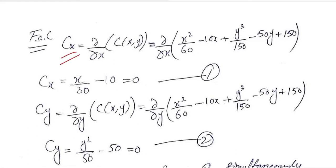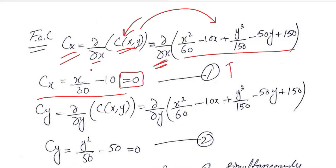This is Cx, the derivative of function C with respect to X. You can take this derivative easily. This is the C function, and its derivative with respect to X is here. Then we have Cy, the derivative of the cost function with respect to Y, as you can see here.